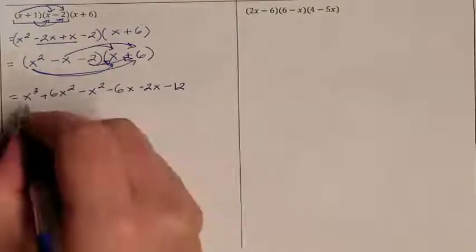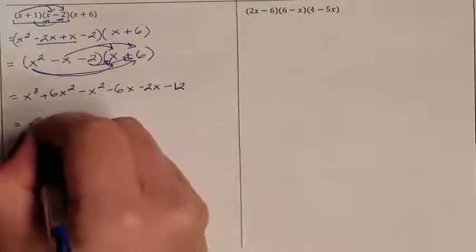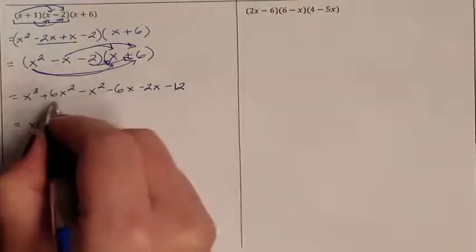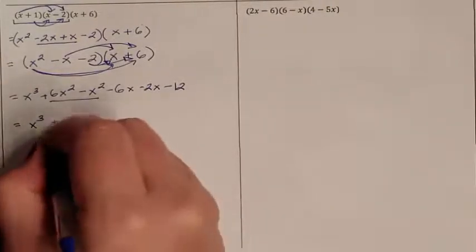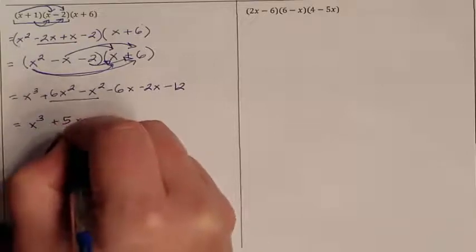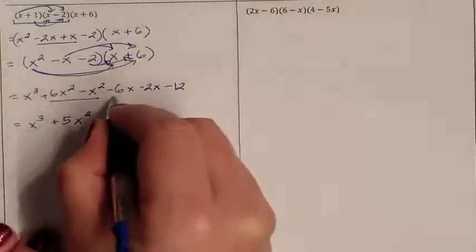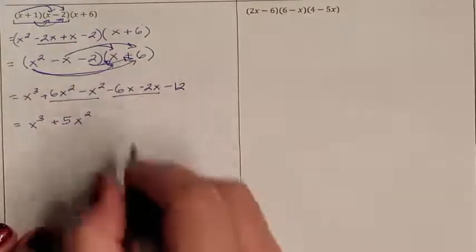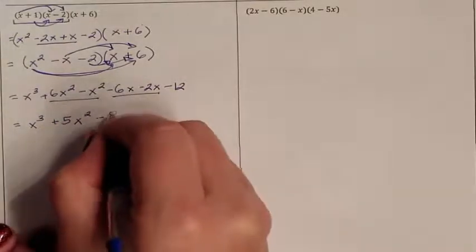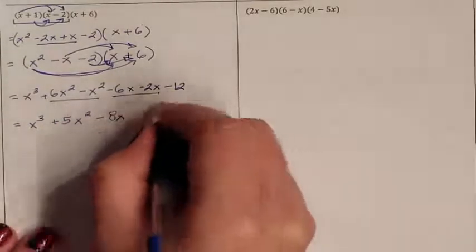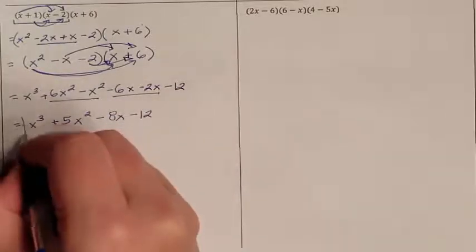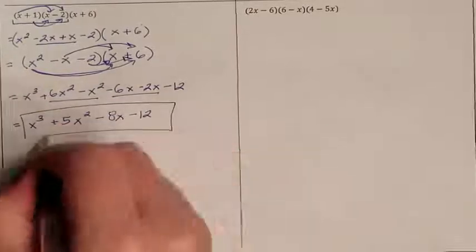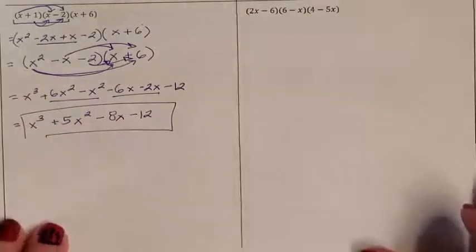Now we're just combining like terms. We have x to the third. x squareds go together: plus 5x squared. x's combine to minus 8x. And constants go with constants: minus 12. So we just went ahead and multiplied those.